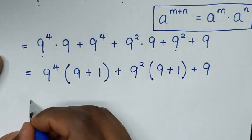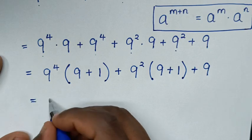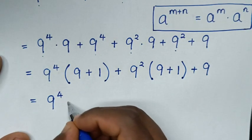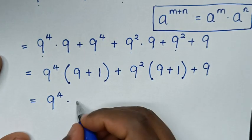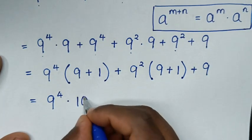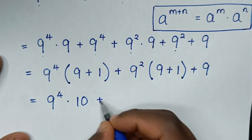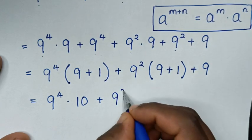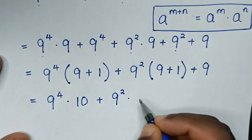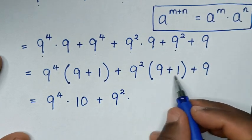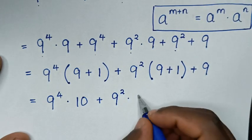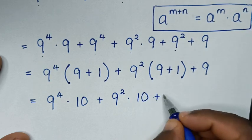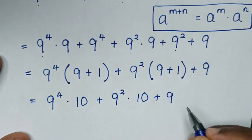Then it will be equal to: 9 power 4 times (9 plus 1), which is 10. Plus this 9 power 2 times (9 plus 1), which is 10. Then plus this 9.